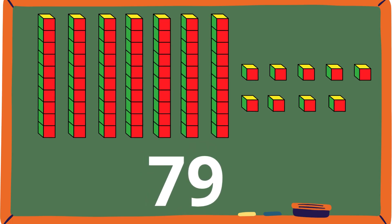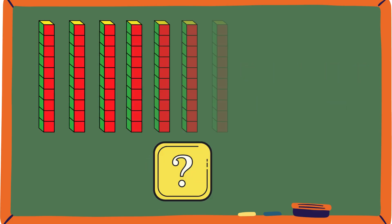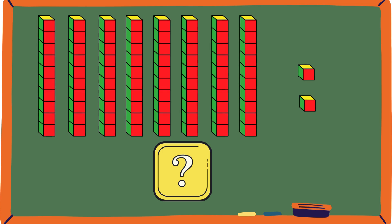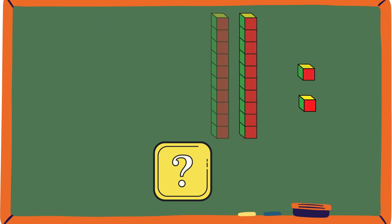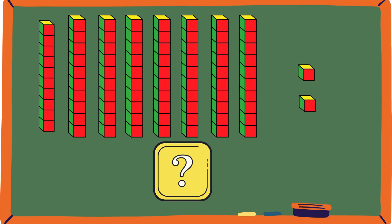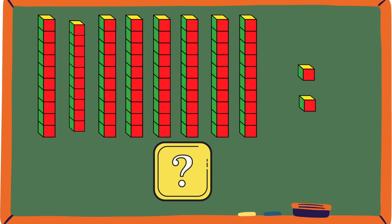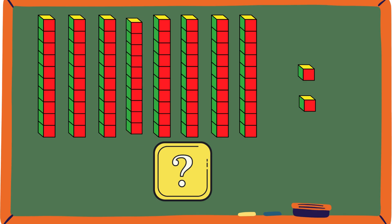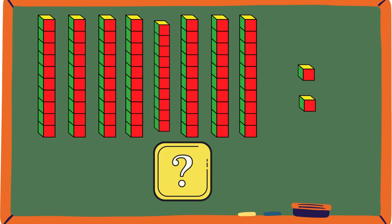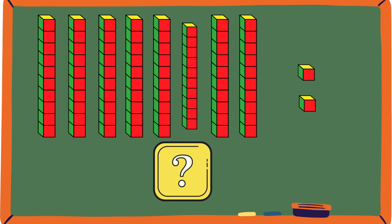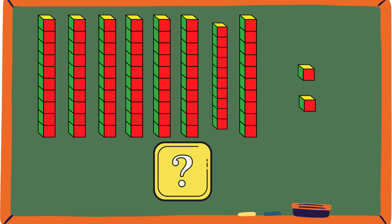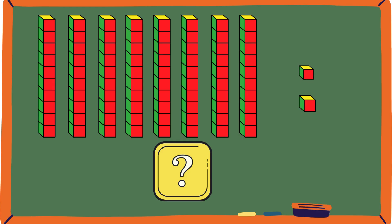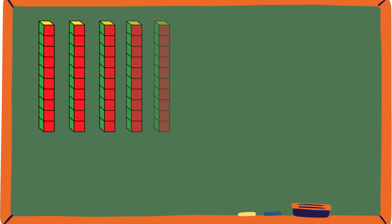Let's see who can get this one right first — count the blocks and tell me the number they represent: 10, 20, 30, 40, 50, 60, 70, 80, 81, 82. Let's check it out — that's correct, it's 82! You're all doing awesome, keep it up!